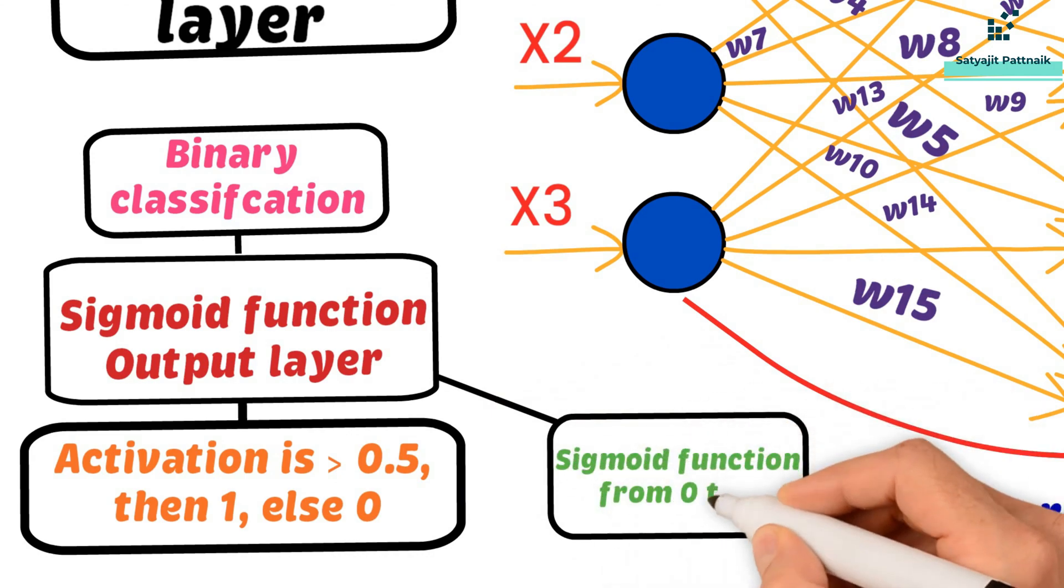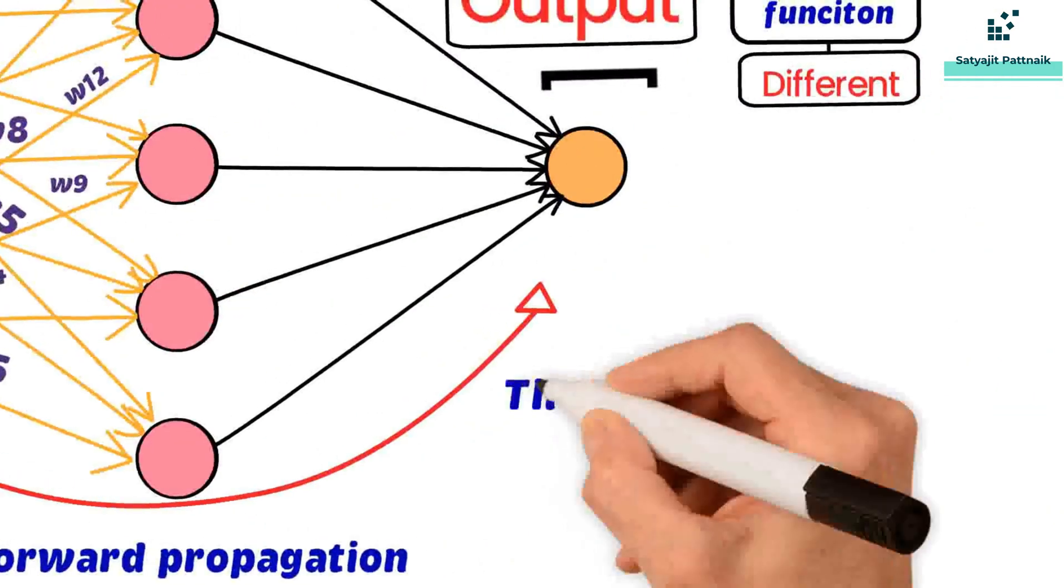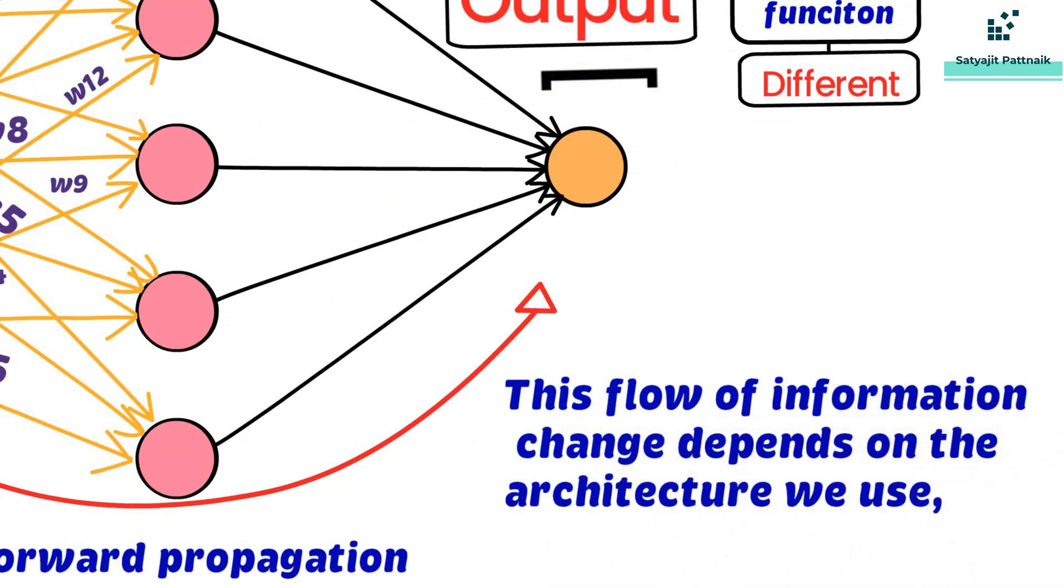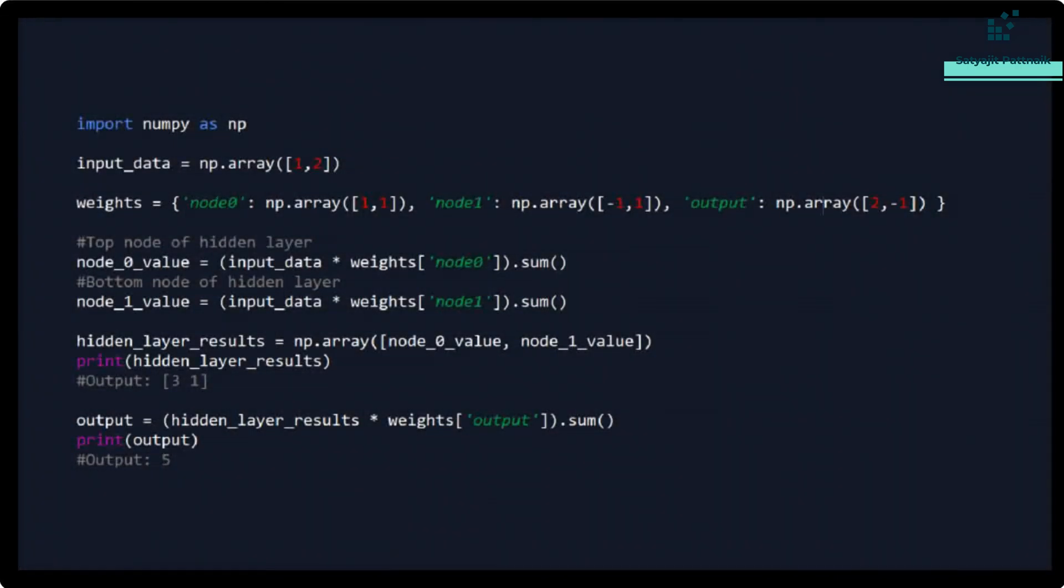This flow of information change depends on the architecture we use, but the general idea is the same. Let's see how forward propagation works for a single data point. This is a program to understand the concept.